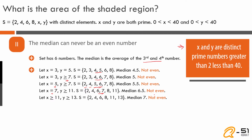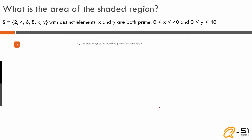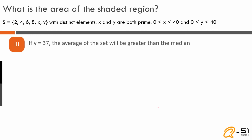For the final case, x≥11 and y≥13: the ascending order is 2, 4, 6, 8, x, y, and the middle two numbers are 6 and 8, giving a median of 7 — not even. Having evaluated all possible cases, in every scenario the median is either an odd number or a non-integer. So Statement 2 — the median can never be an even number — is also true.